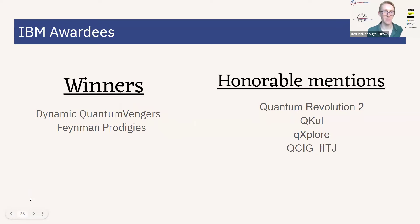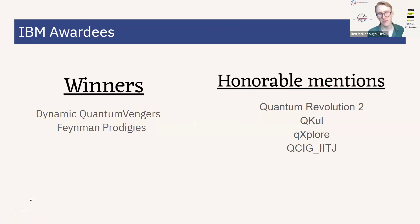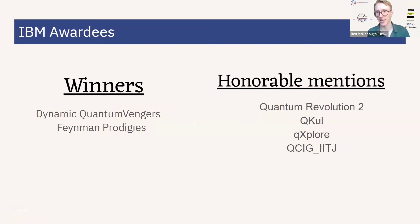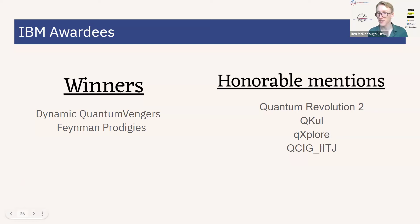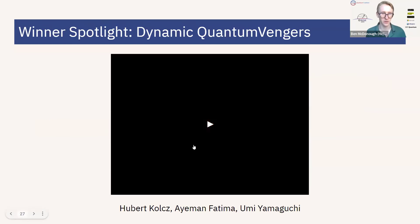For IBM, we'd like to announce our winners: the Dynamic Quantum Avengers and the Feynman Prodigies. For our honorable mentions, we have Quantum Revolution 2, QCOOL, QExplore, and QCIG IITJ. It was hard to pick clear winners out of these projects, so thank you so much for your hard work. Now we're going to move on to spotlight a couple aspects of the winning projects that led us to choose these.